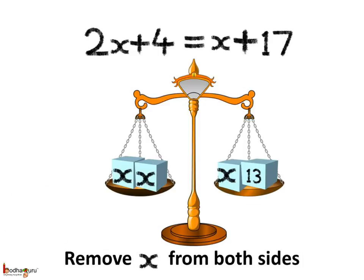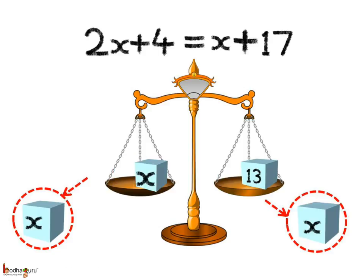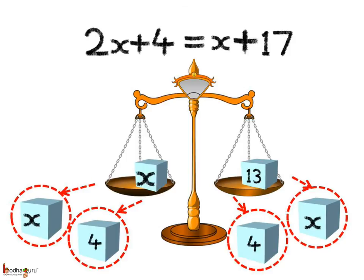Now, let us take out 1x from both pans, as they have the same values. So, remove x from both sides. What do we get? x is equal to 13.